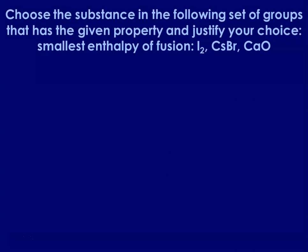Looking at enthalpy of fusion: I2 is a molecular nonpolar solid with only London dispersion forces, while CsBr and CaO are ionic solids with electrostatic forces. Enthalpy of fusion is directly related to intermolecular force strength, so I2 has the smallest enthalpy of fusion. If asked for the greatest, it would likely be CaO, because CaO is smaller than CsBr, holds electrons more tightly, and requires more energy to separate the calcium and oxygen ions.